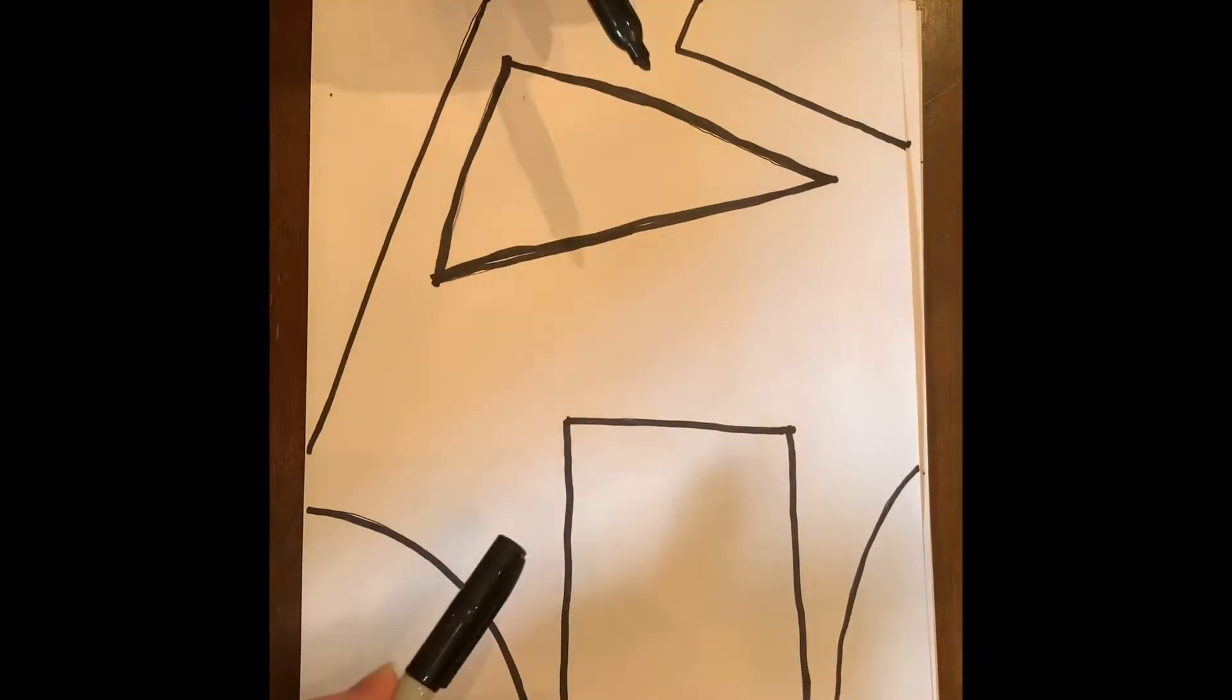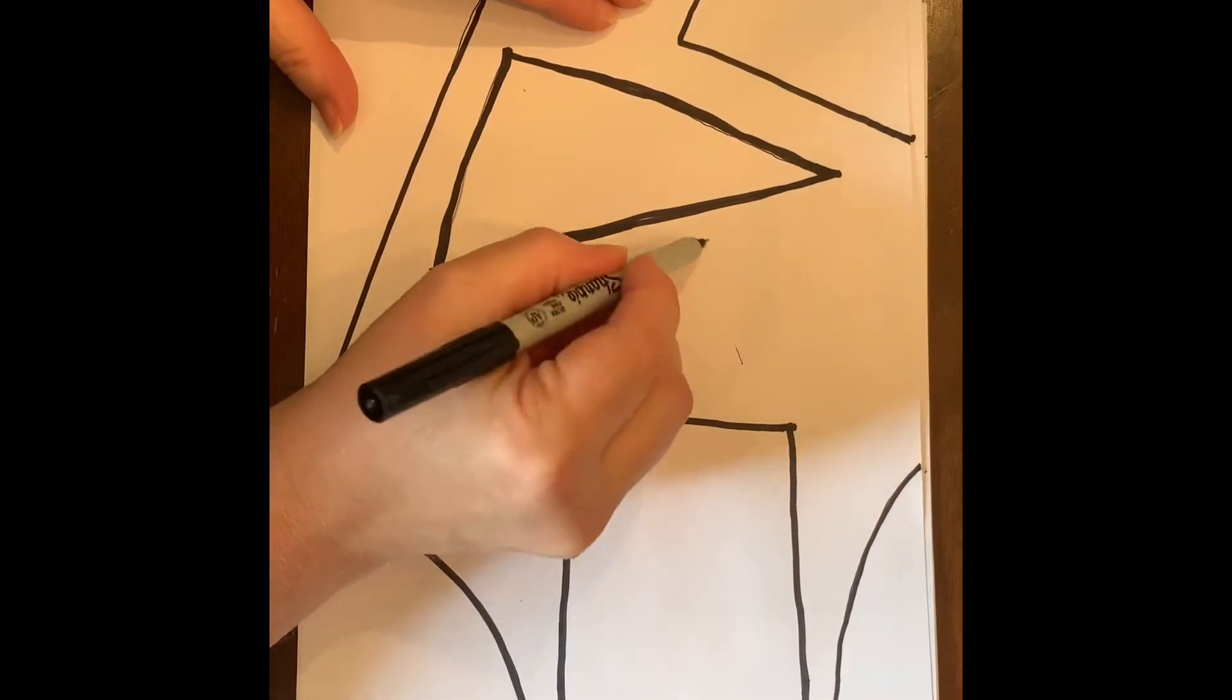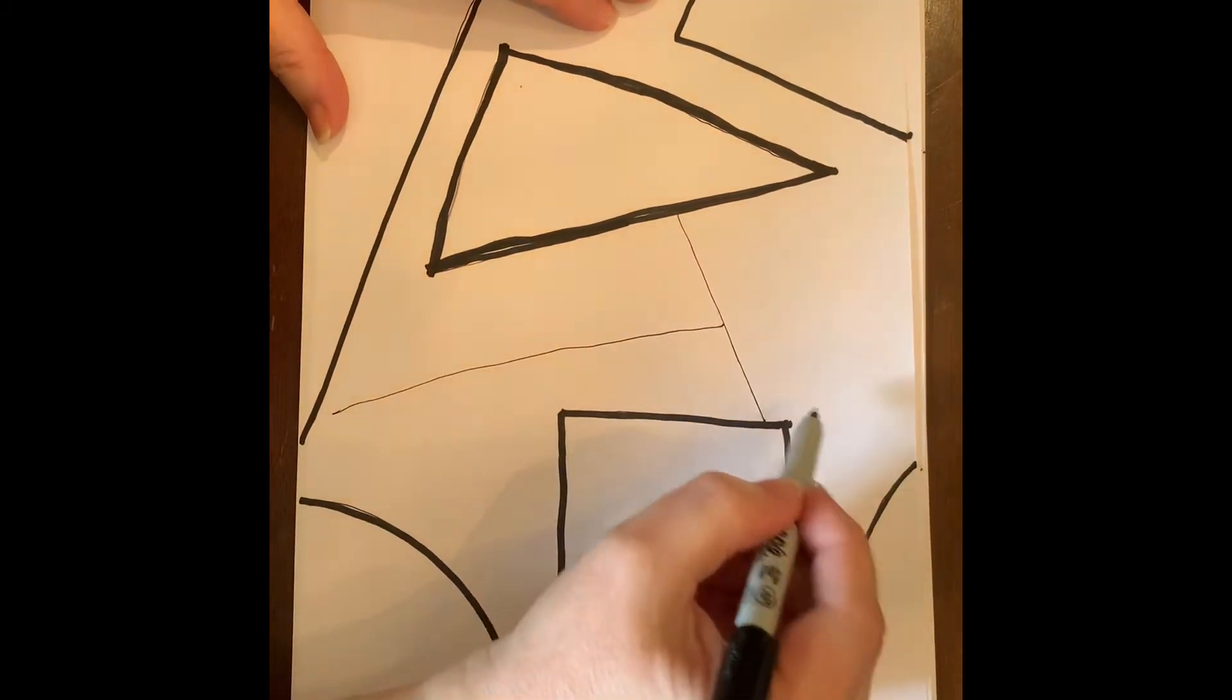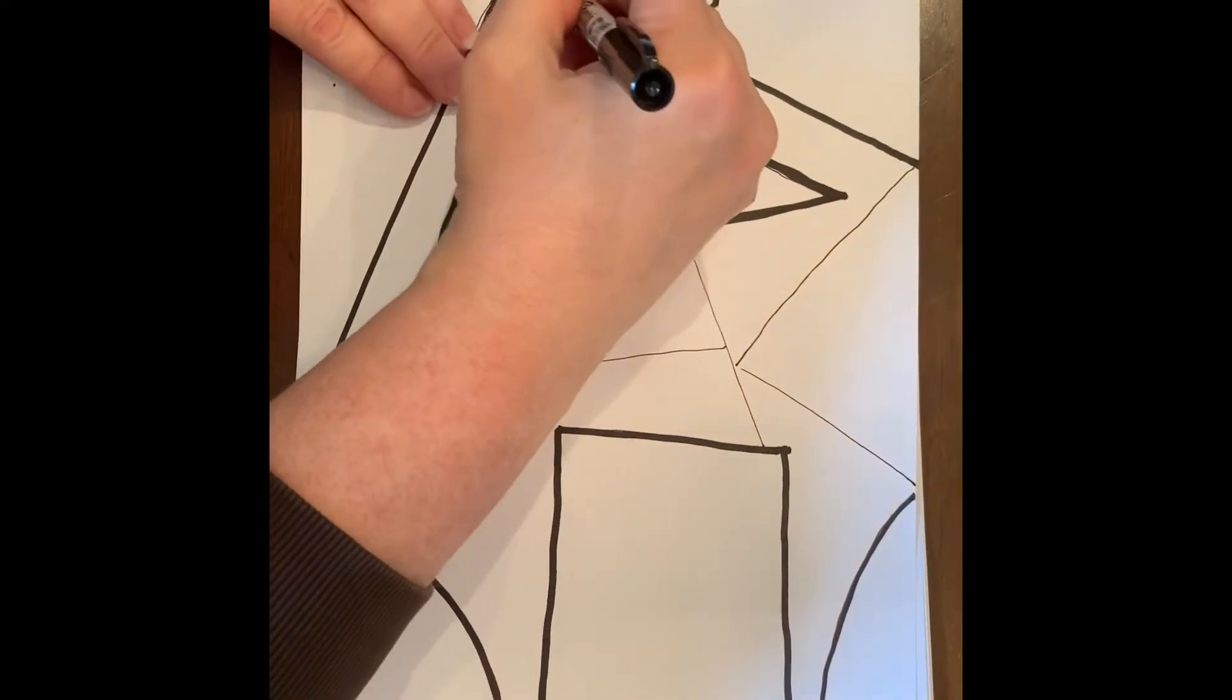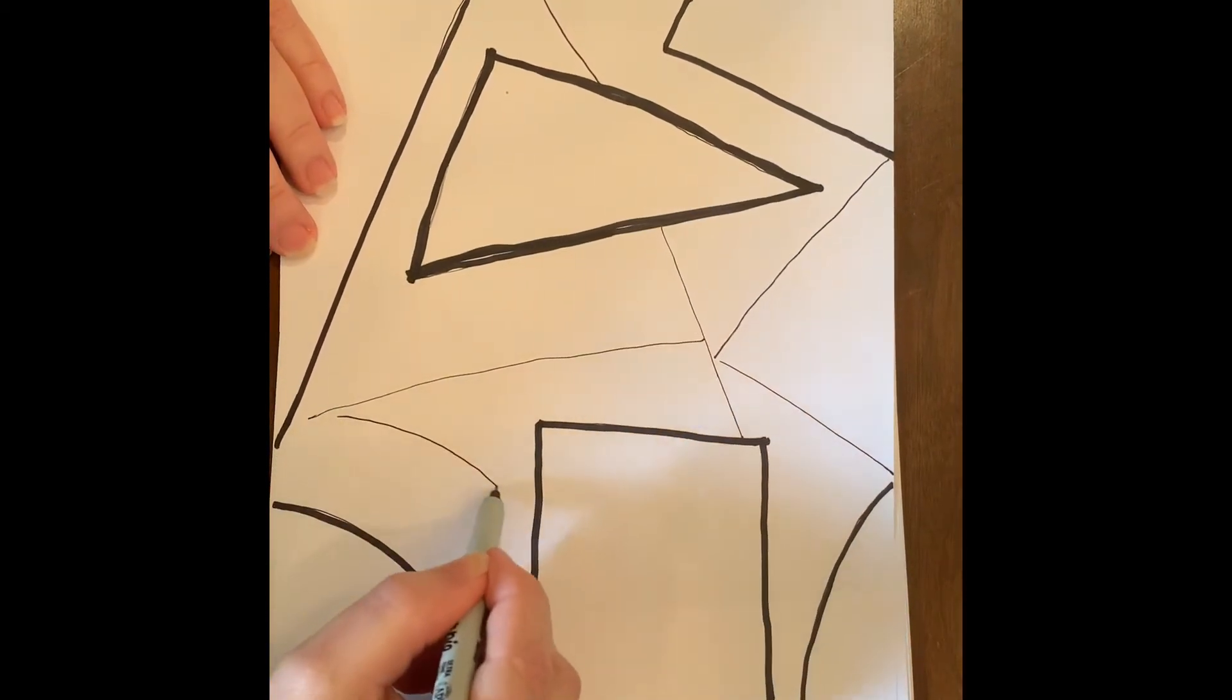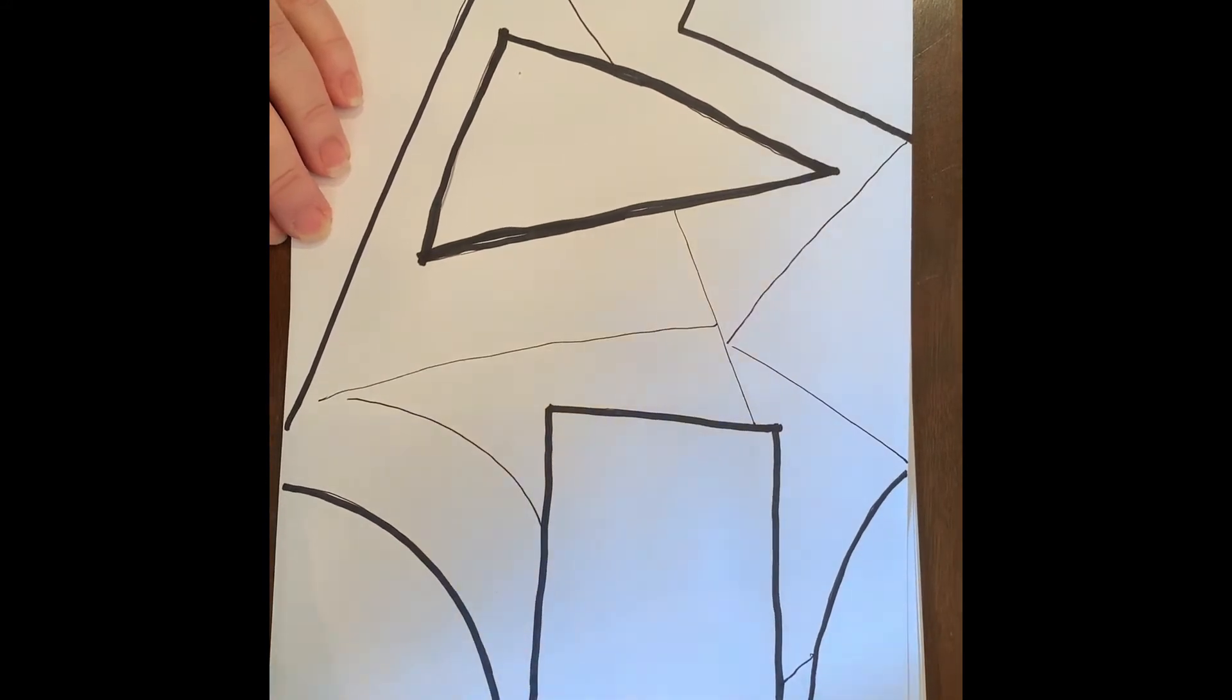The next thing we've done after we do that is I'm going to go back to my small marker and I'm going to do some bisecting lines to make it a lot more interesting on the page. And so I'm just going to go in between shapes to divide them up a little bit and you could even make some of these round shapes.